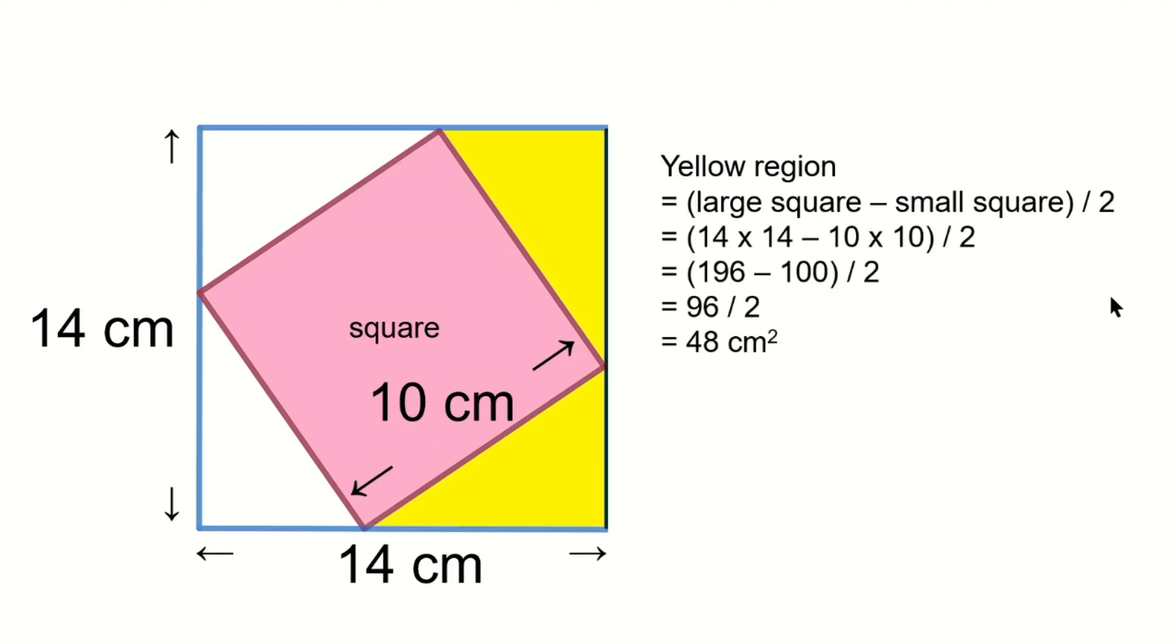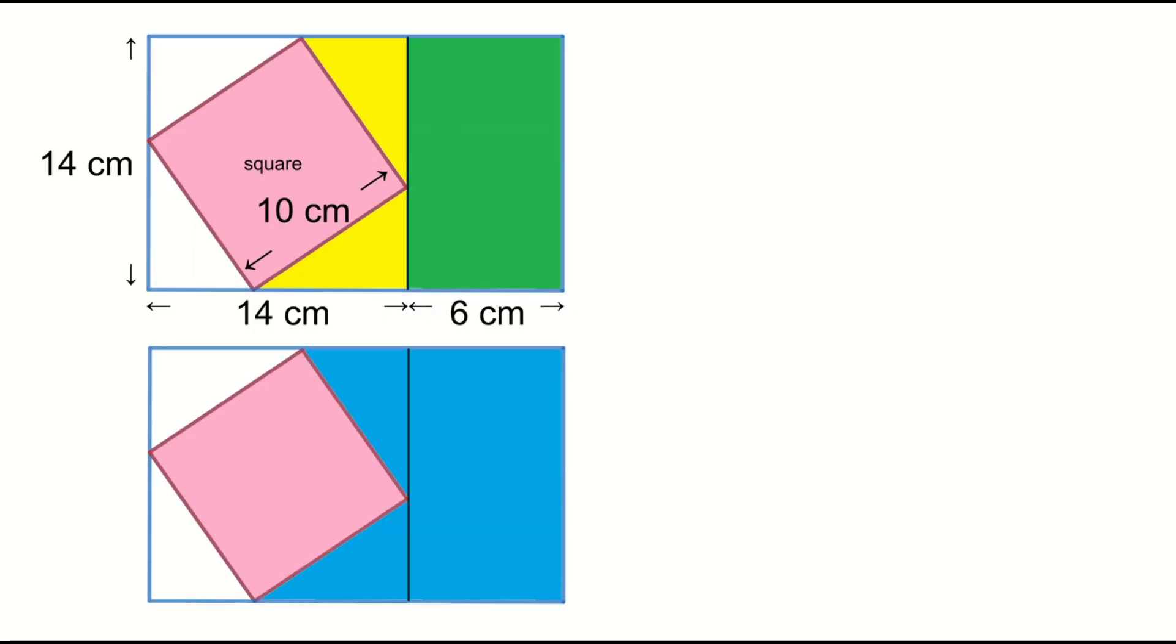Now we have all the information. Green rectangle equals 14 times 6, equals 84 square centimeters.